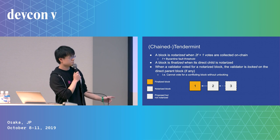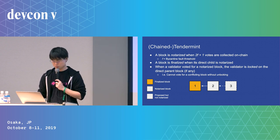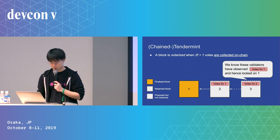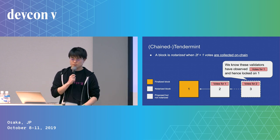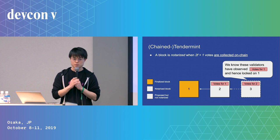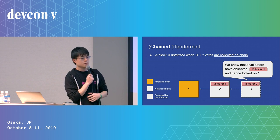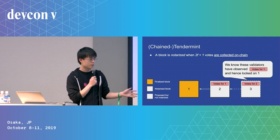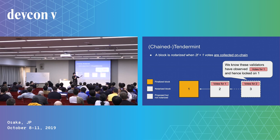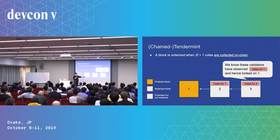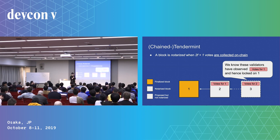The reason why we can say the first block is finalized is that we know these validators voted on-chain. This is why on-chain voting is very important for these protocols.